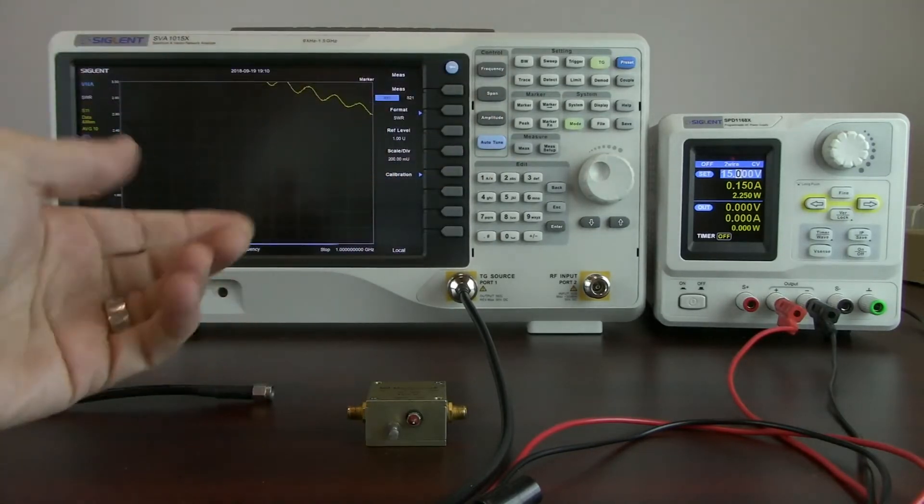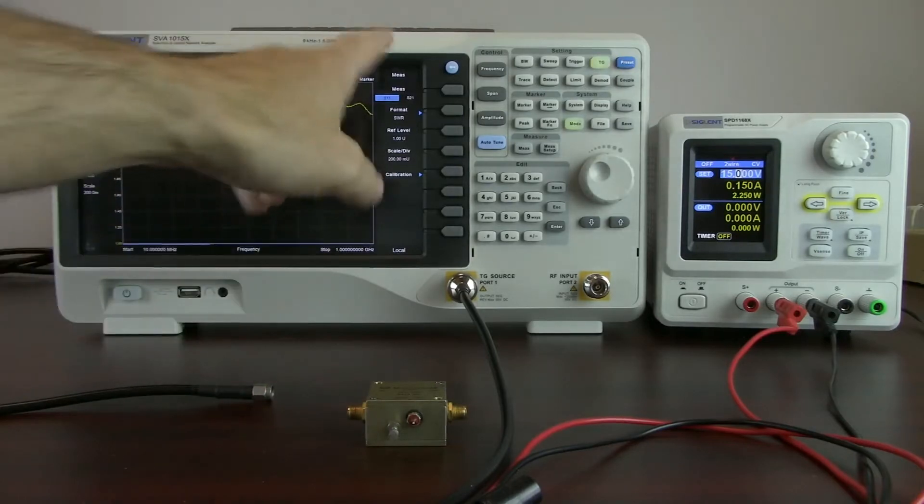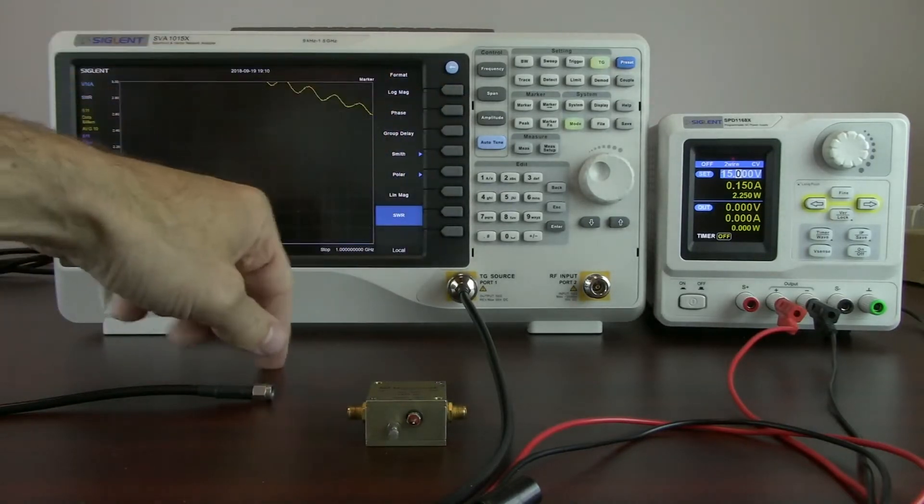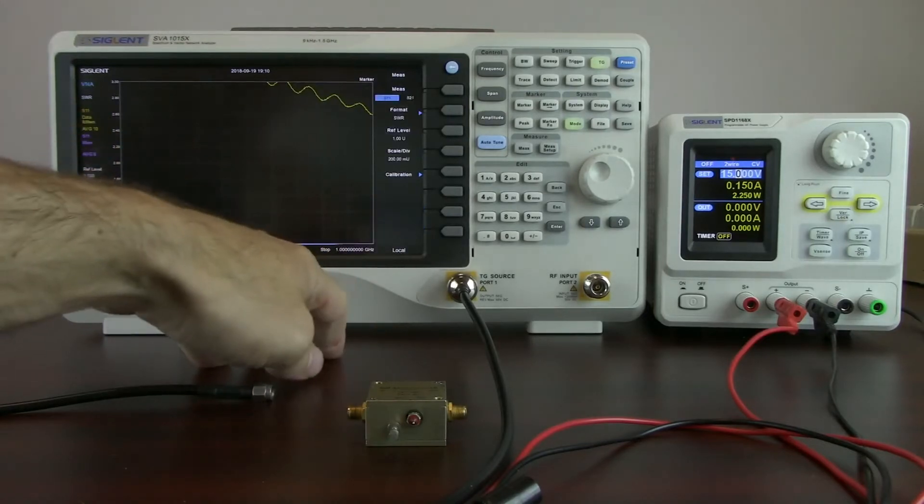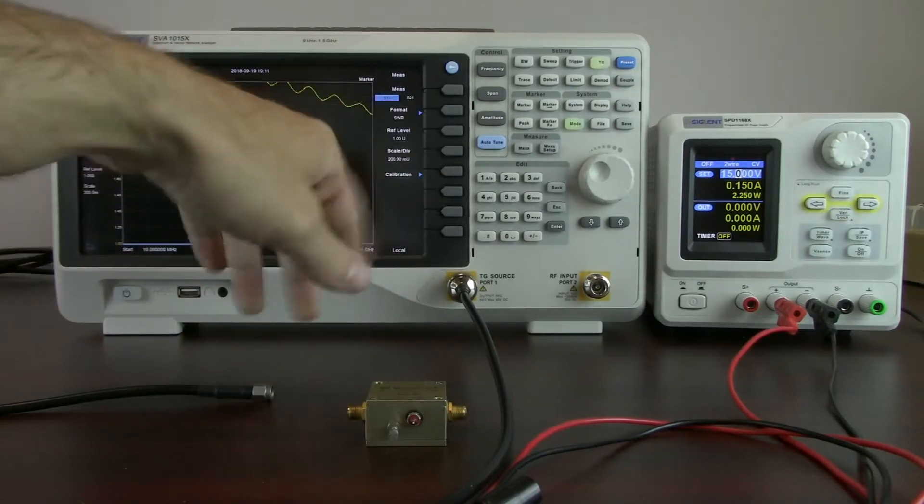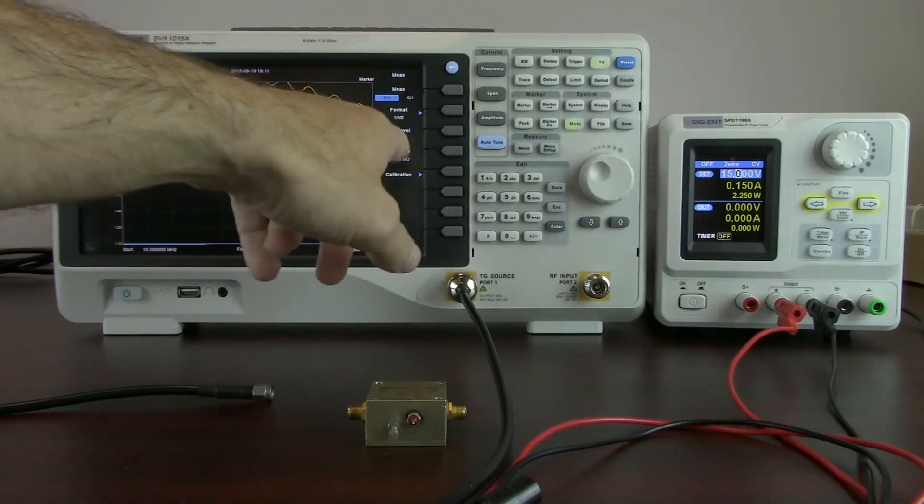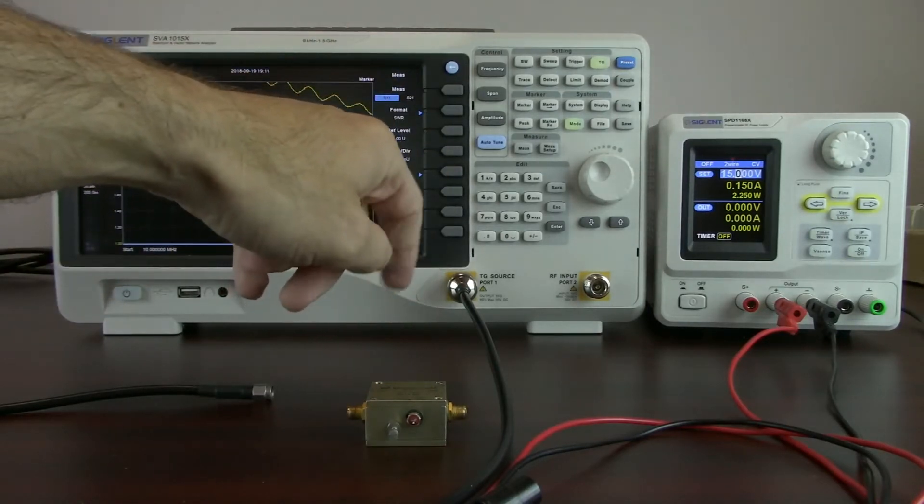In this case, since we're going to be looking at the VSWR, we're going to look at S11. And for the format, we've got a number of different formats available. We're going to select SWR. And we've already set our scale and things previously. So you can adjust the reference level as well as the scale per division.